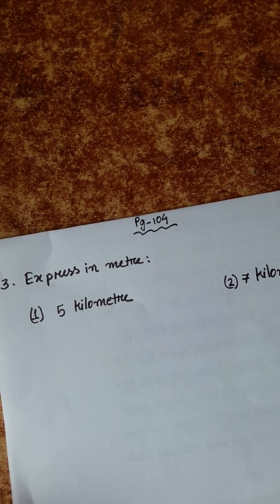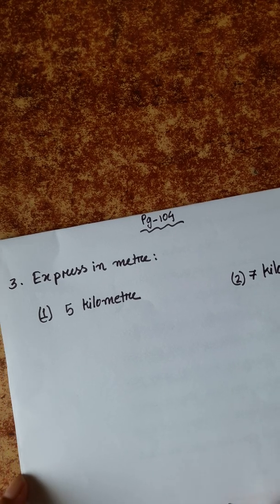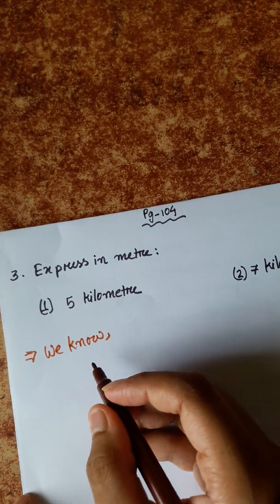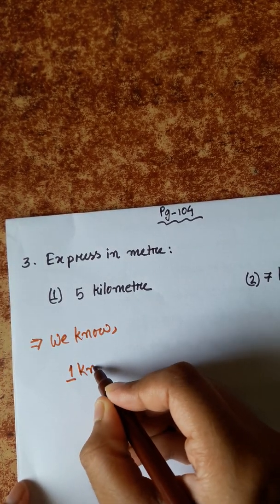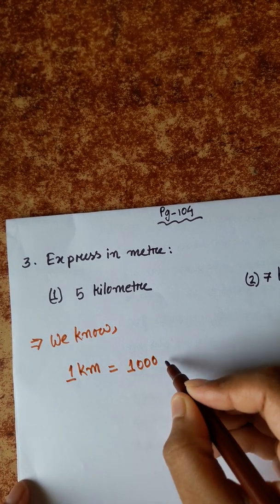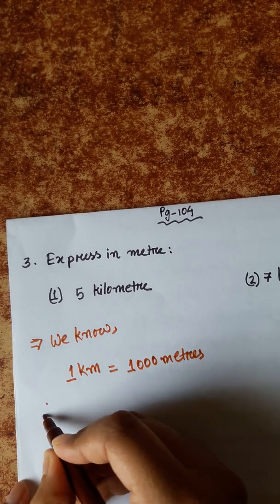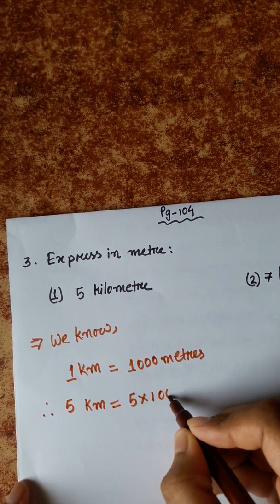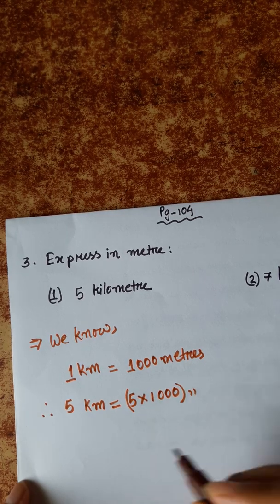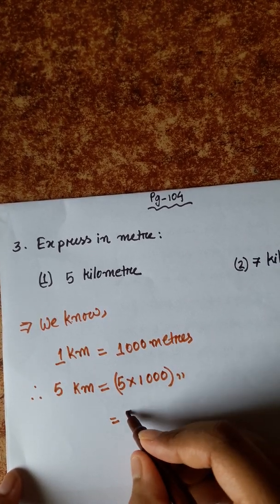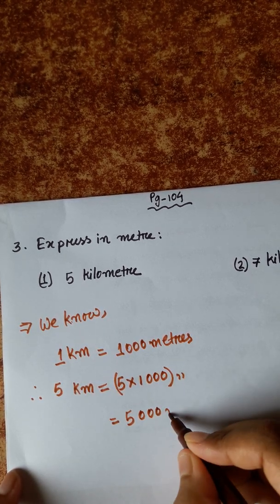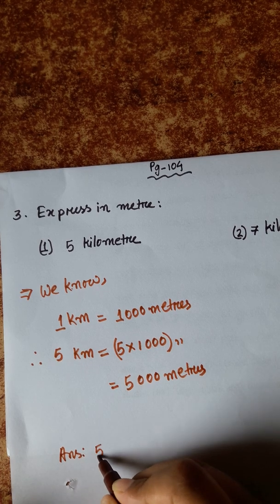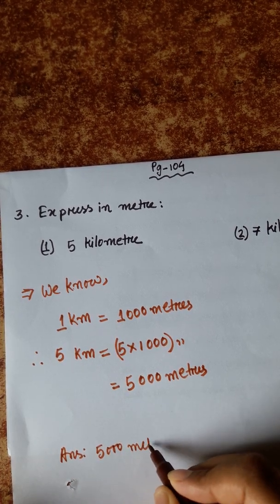Number 1: 5 kilometers. We express 5 kilometers in meters. We know 1 kilometer is equal to 1000 meters. So 5 kilometers is equal to 5 into 1000 meters, which equals 5,000 meters. Answer: 5,000 meters.